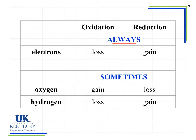Sometimes the easier way to identify redox reactions is through the gain or loss of oxygen or hydrogen. Sometimes we will see both the gain of oxygen and a loss of hydrogen, or vice versa, but sometimes the most immediate indicator is simply a gain of oxygen or a loss of hydrogen. We don't have to see both in order to identify it as a redox reaction.